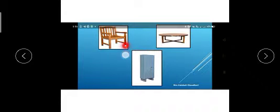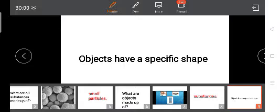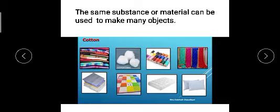Objects have a specific shape. You can see here the chair has a specific shape - it is rectangular or square. The table is round in shape, and the cupboard is rectangular in shape. So we can easily identify with the help of its shape.